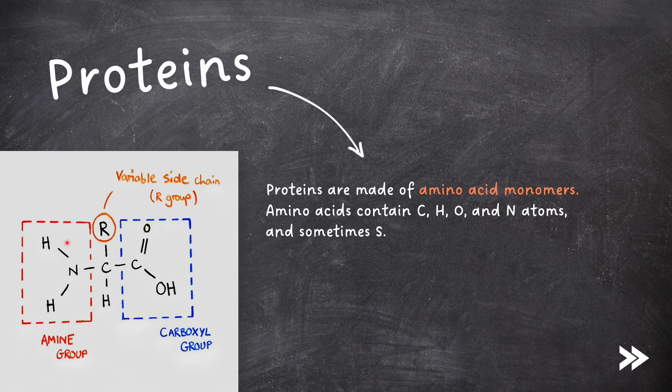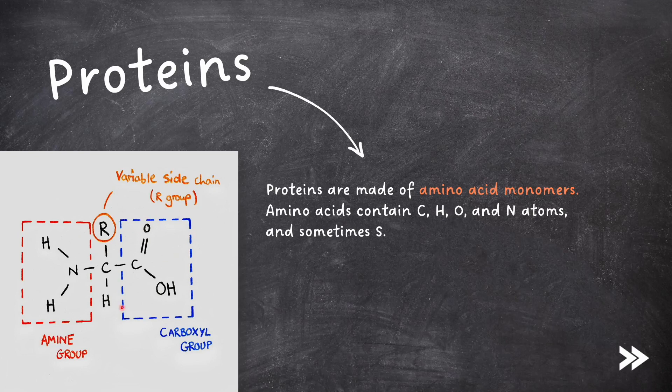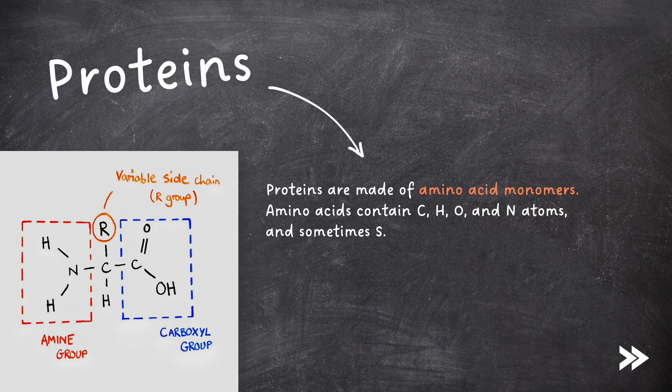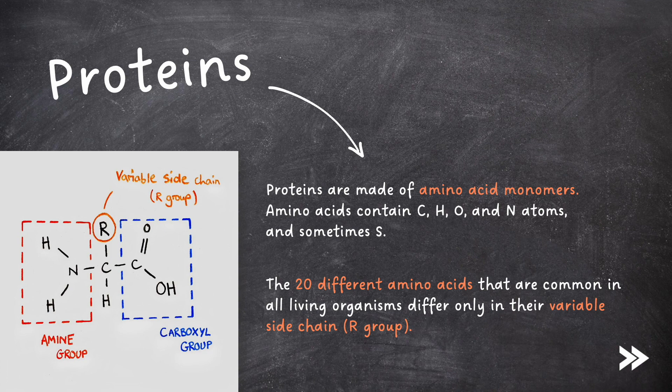We have an amine group, NH2, a carboxyl group, COOH, and an R group, which is the variable sidechain. There are 20 different amino acids that are common in all living organisms, and all of these differ only in this variable sidechain.